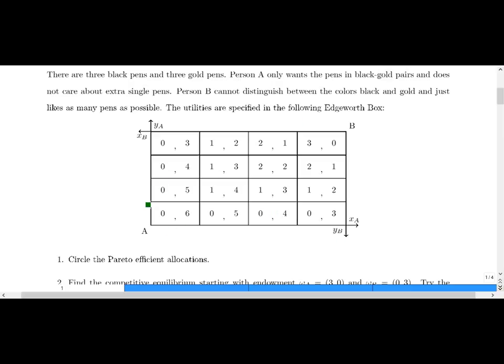So when I draw the Edgeworth box, this thing on the edge, these cells count the number of units of goods that's allocated. So basically you have 0 units of y, 1 unit of y, 2 units of y, 3 units of y. And here is 0, 1, 2, 3 units of x. So these are the units of x, these are the units of y.